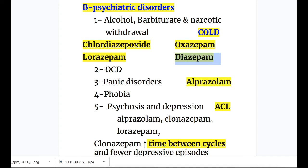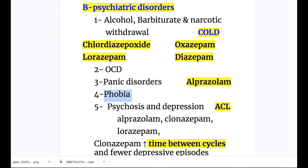Number two, they are used in obsessive compulsive disorders. Number three, panic disorders — the drug of choice is alprazolam. Number four, phobia. Number five, psychosis and depression. The mnemonic is ACLA — A for alprazolam, C for clonazepam, and L for lorazepam. Of these drugs, clonazepam increases the time between cycles and causes fewer depressive episodes.